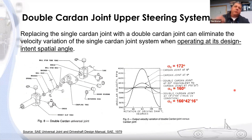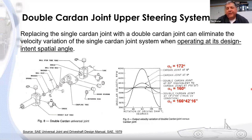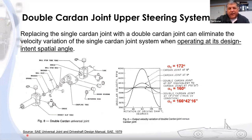Suppose you don't want that variation in a single joint system. You can replace that single cardan joint with a double cardan joint. A double cardan joint is essentially two cardan joints connected by a coupling yoke. There is math associated with properly phasing the yokes — the idea is that at any operating angle, when one yoke is at a velocity maximum, the other is at a minimum, and they cancel each other out, giving a near-constant velocity output.